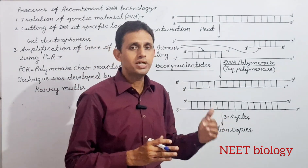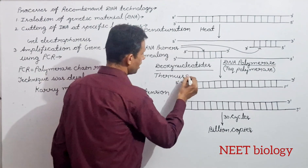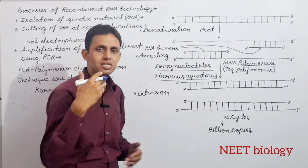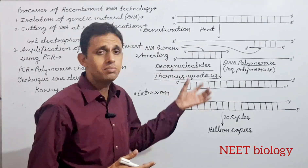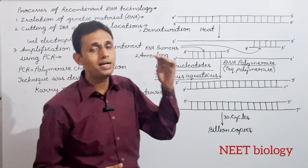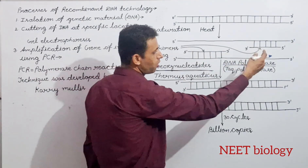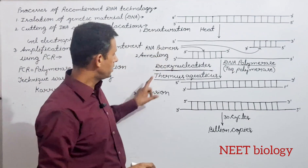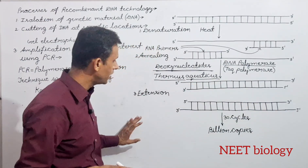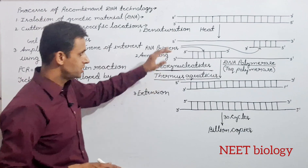इसके अलावा DNA polymerase enzyme देंगे। चूंकि इस process में temperature high है, हमें एक thermostable DNA polymerase चाहिए। एक bacteria है जिसका नाम है Thermus aquaticus, जो 100 degree centigrade तक stable रहता है। इस bacteria से प्राप्त DNA polymerase को हम Taq polymerase कहते हैं। DNA polymerase enzyme और deoxynucleotides देने पर primers polymerize होंगे — यह third step है extension।